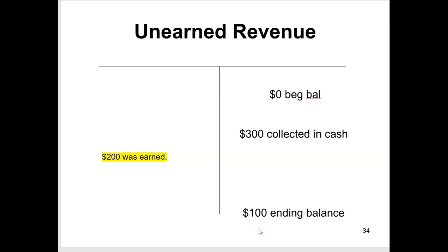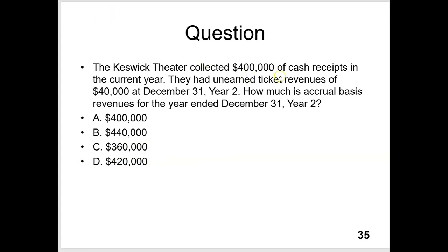Therefore, whatever the ending balance of unearned revenue is, subtract it from cash collected to find how much was earned. For example: the Keswick Theater collected $400,000 of cash receipts in the current year and had unearned ticket revenues of $40,000 at December 31st, Year 2. How much is accrual basis revenue? Starting point: $400,000 collected. The $40,000 ending unearned balance was collected this year but earned next year — subtract it. Revenue earned = $360,000.